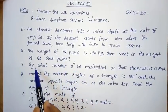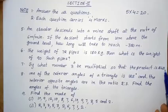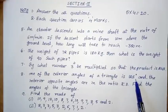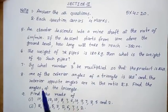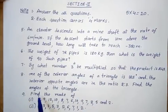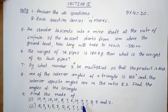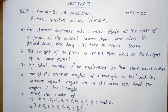Seventh question: By what number should 3 power 4 be multiplied so that the product is 243? Eighth question: One of the exterior angles of a triangle is 125 degrees and the interior opposite angles are in the ratio 2:3. Find the angles of the triangle. Ninth question: Find the mode of — first set: 10, 9, 12, 10, 8, 7, 6, 9, 10, 9, 7, 8, 5, 2. Second set: 2, 3, 7, 5, 3, 2, 6, 7, 1, 2.